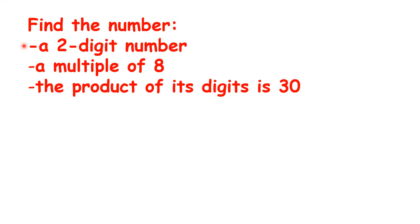Pause the video for each of these questions and see if you can find the number. It's a two-digit number, so it has tens and units. It's a multiple of eight, so it's in the eight times table. And the product of its digits is 30. That means when you multiply the digits of the number together, you get 30.